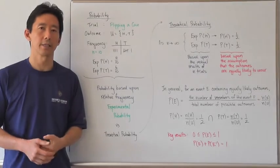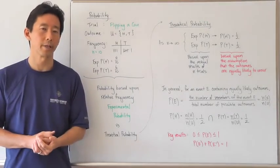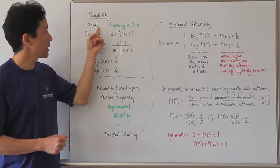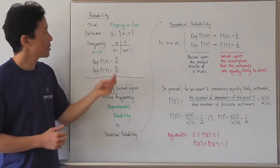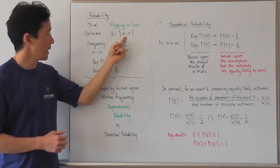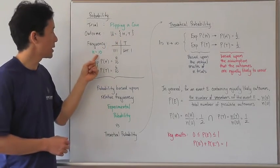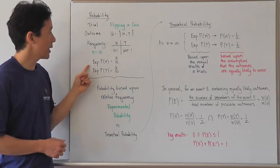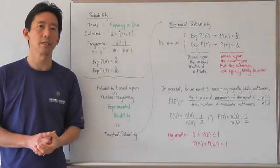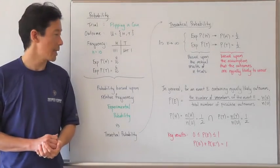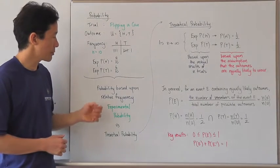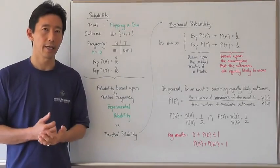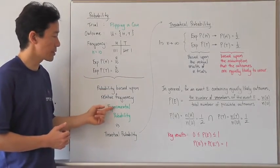Let's continue our discussion on probability. In our previous discussion we talked about flipping a coin trial with two outcomes in the universal set. If we repeated that trial ten times then we could come up with a frequency chart to establish the experimental probabilities of getting a head as well as getting a tail, based upon a relative frequency.